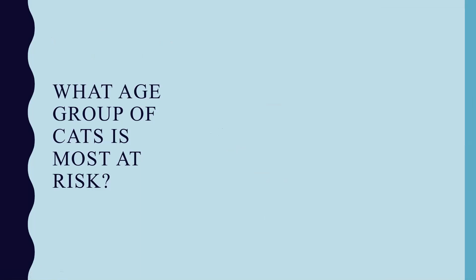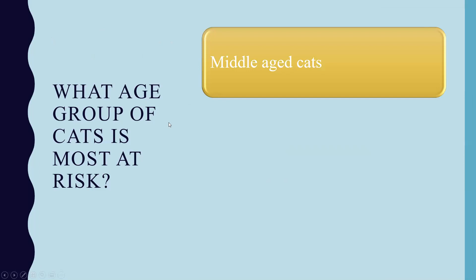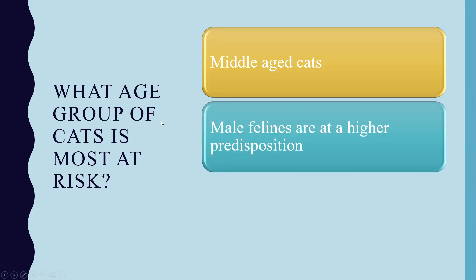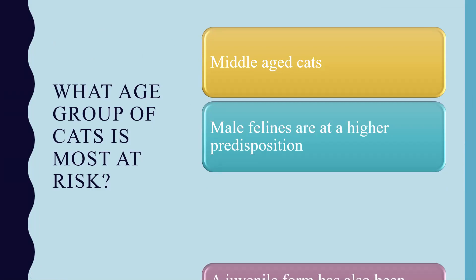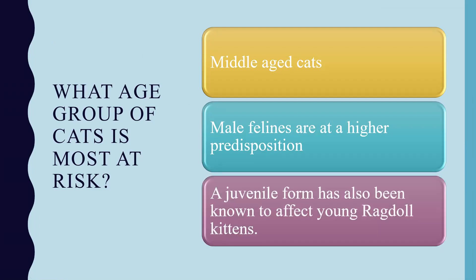The age group most at risk is primarily middle-aged cats, anywhere from age 3 to 5, when they typically display symptoms. Males tend to have a higher tendency to develop this disease than females, though it is not clear why. A juvenile form of the disease has also been found to affect very young Ragdoll kittens.